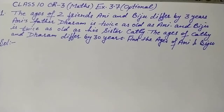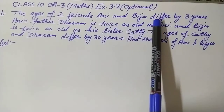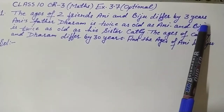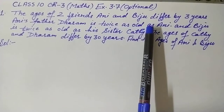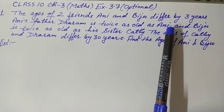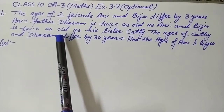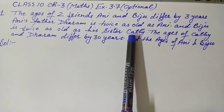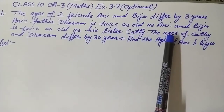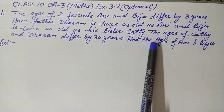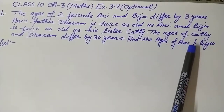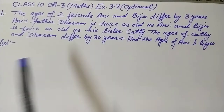Let's do this question. The question is: the ages of two friends Ani and Biju differ by three years. Ani's father Dharam is twice as old as Ani, and Biju is twice as old as his sister Cathy. The ages of Cathy and Dharam differ by 30 years. Find the ages of Ani and Biju.